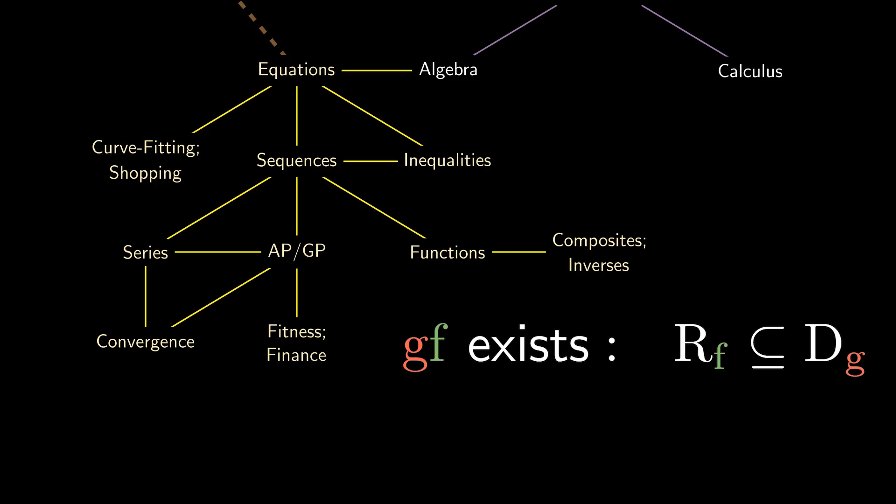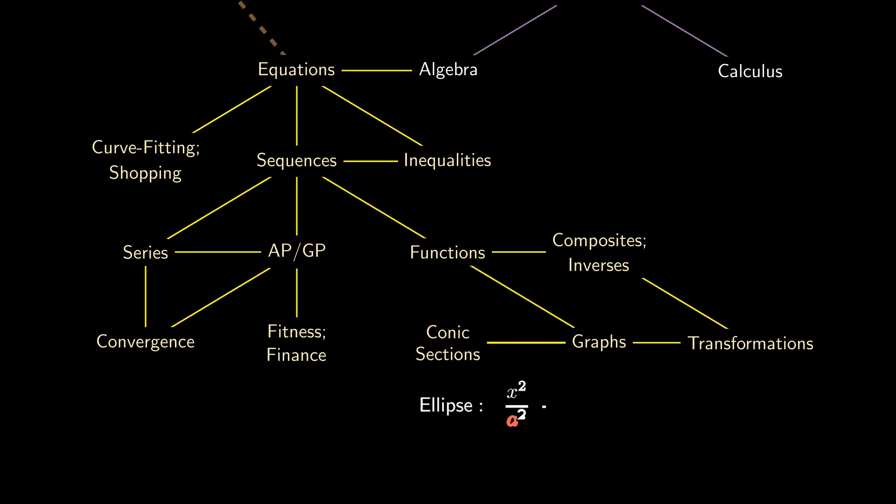The composite function exists when the range of the inner function lies inside the domain of the outer function. Likewise, a function has an inverse precisely when it is one-to-one, and is usually ascertained through the horizontal line test. Inverses are really useful to make sense of transformations, because equations and graphs do the exact opposite of one another.